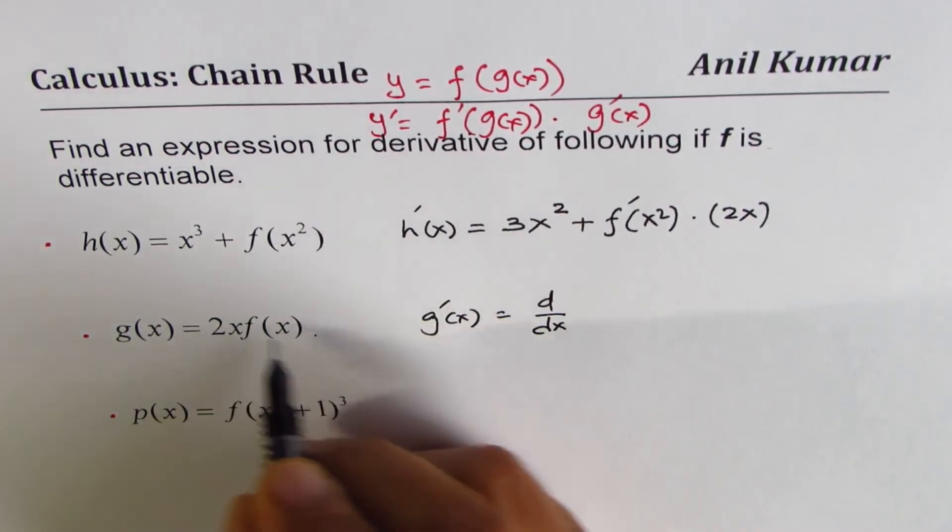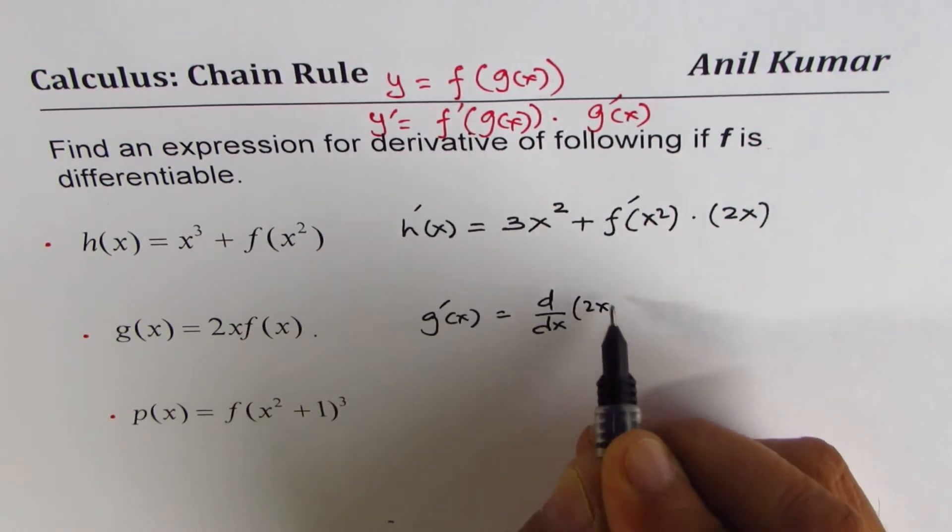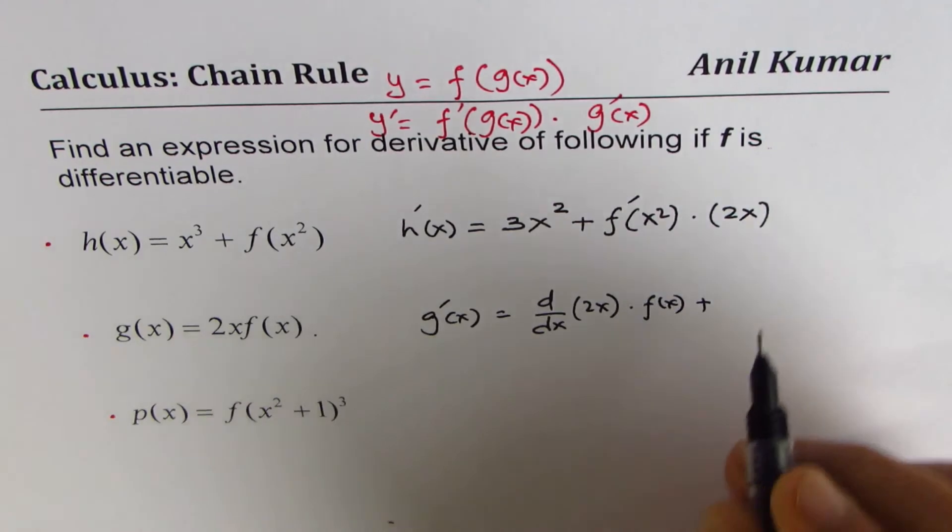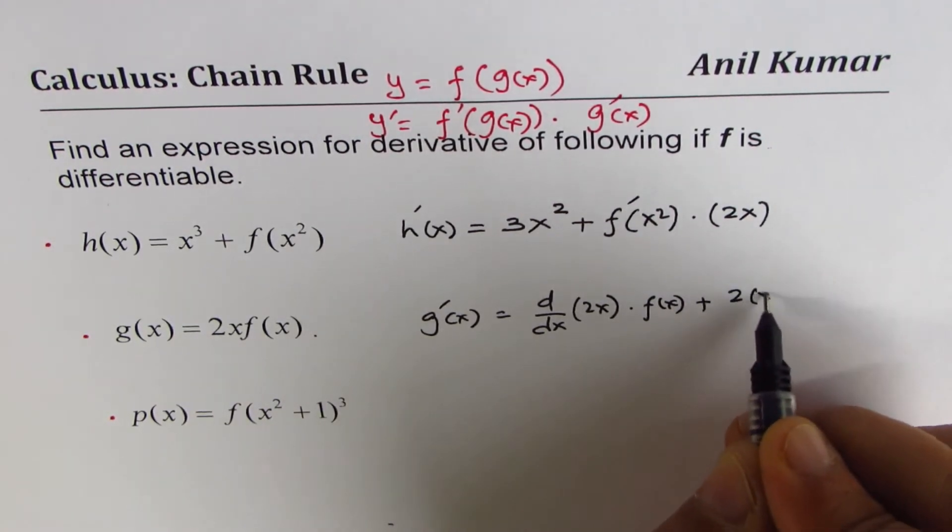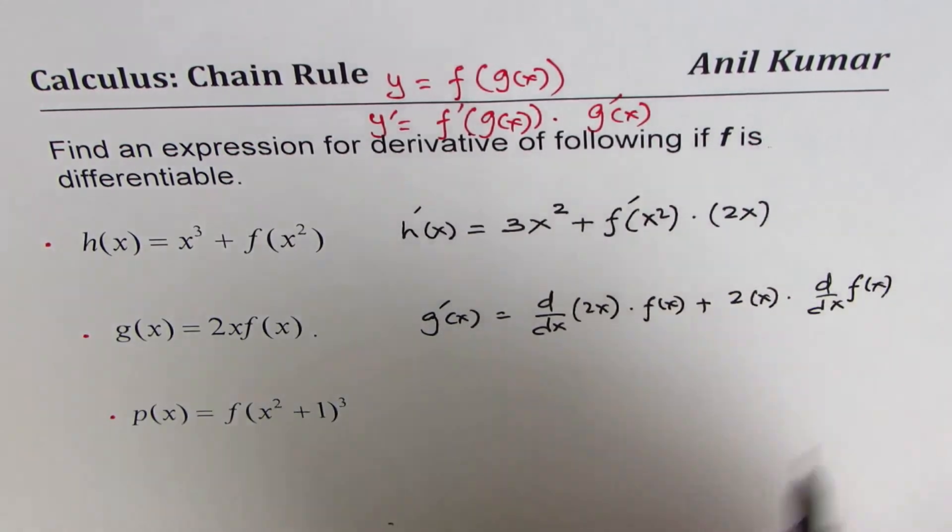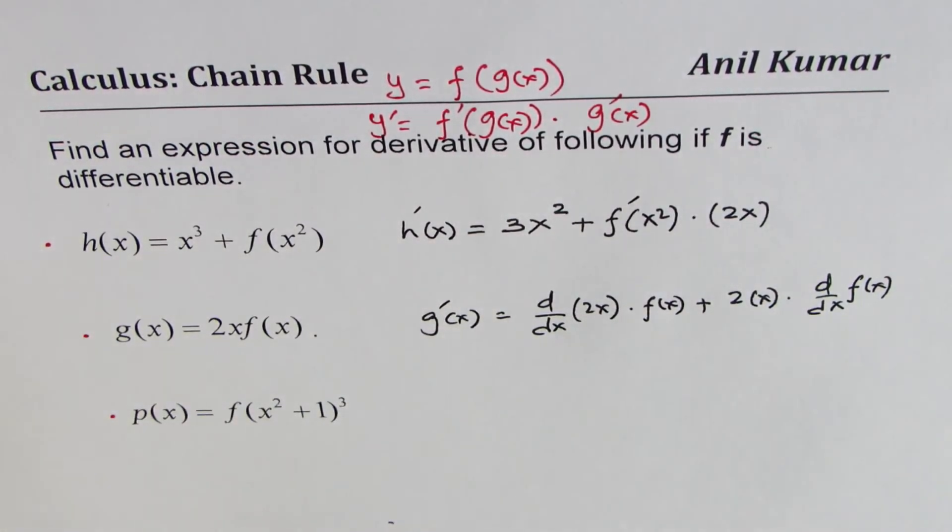So we have d/dx of 2x times f of x plus 2x times the derivative of f of x. So we have applied the product rule here,